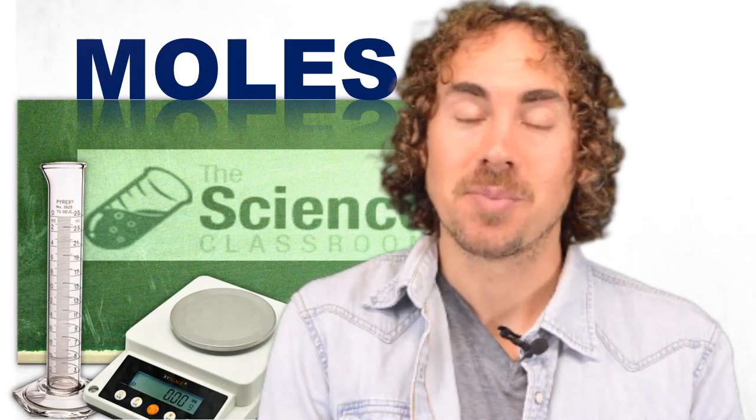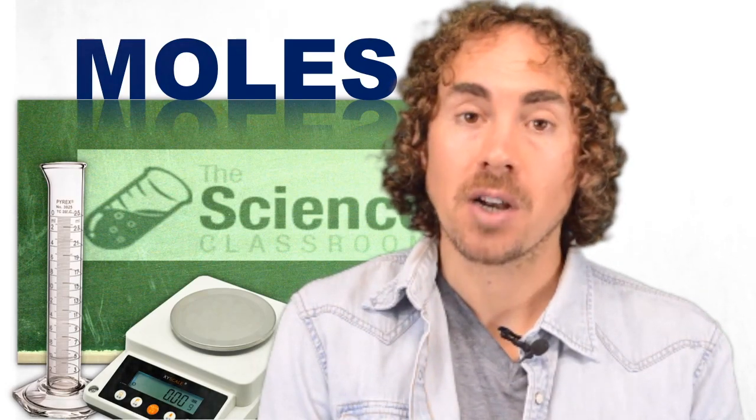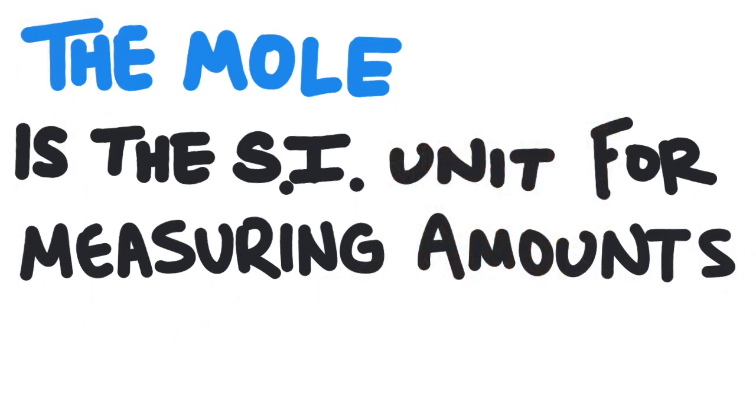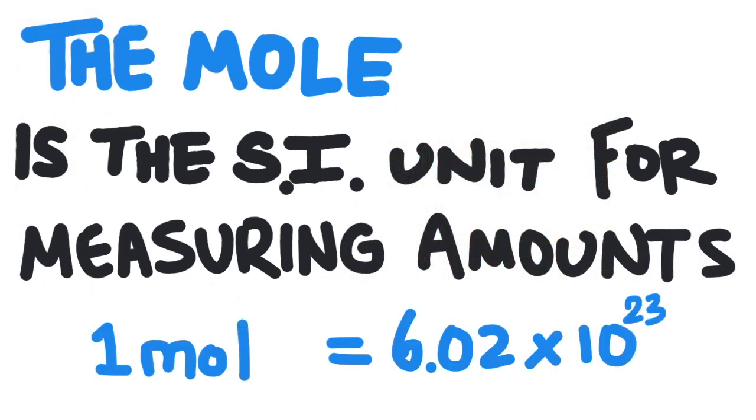Hi, I'm Josh and this is the Science Classroom. This is part two of a two-part investigation on the mole. The mole is the standard unit to measure amounts of things. One mole is equal to 6.02 times 10 to the 23 things. We can have a mole of any substance.